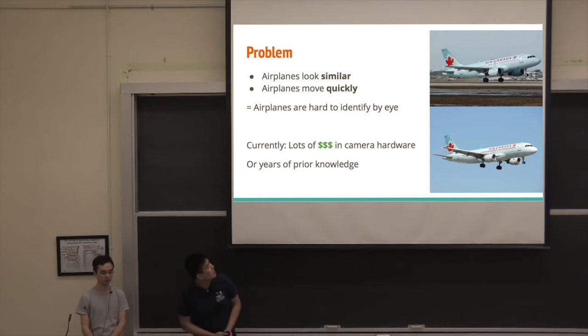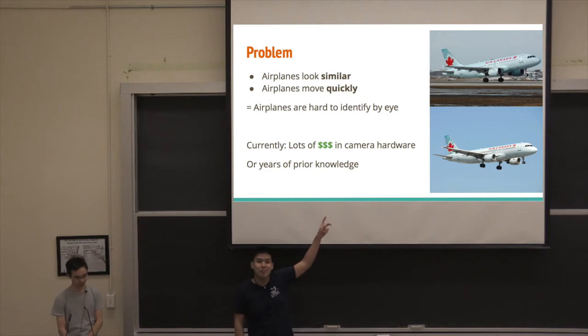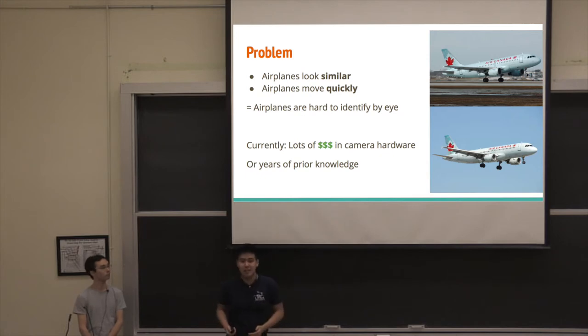Airplanes look very similar. They move very quickly. I want you to take a note of these two aircraft over here. They're actually completely different models, but to a normal person, there's no way. I can't even tell the difference, basically. So to identify them, it's very hard. You either need a lot of prior knowledge, or you need a huge camera to get really close-up pictures.